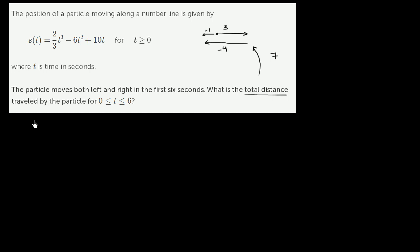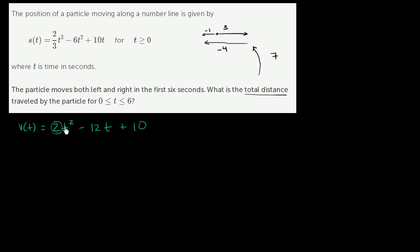The position function is s(t) = (2/3)t³ - 6t² + 10t. The velocity function is the derivative with respect to time: v(t) = 2t² - 12t + 10. This is a quadratic with a positive leading coefficient, so it's an upward-opening parabola.